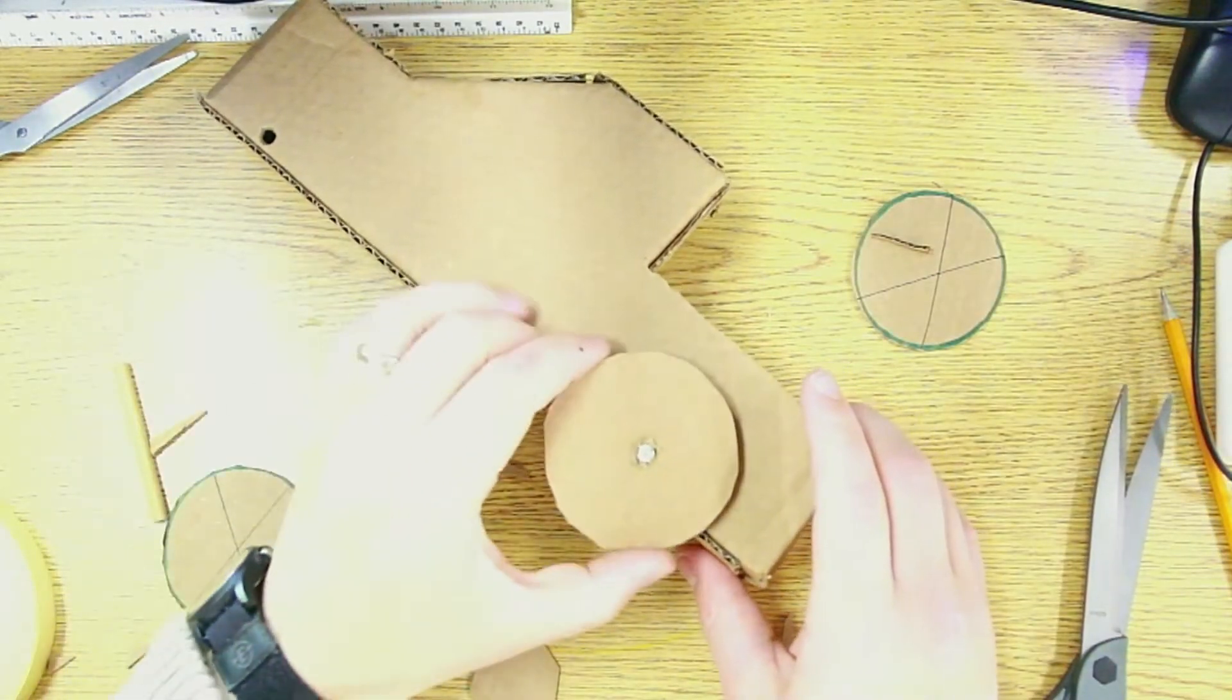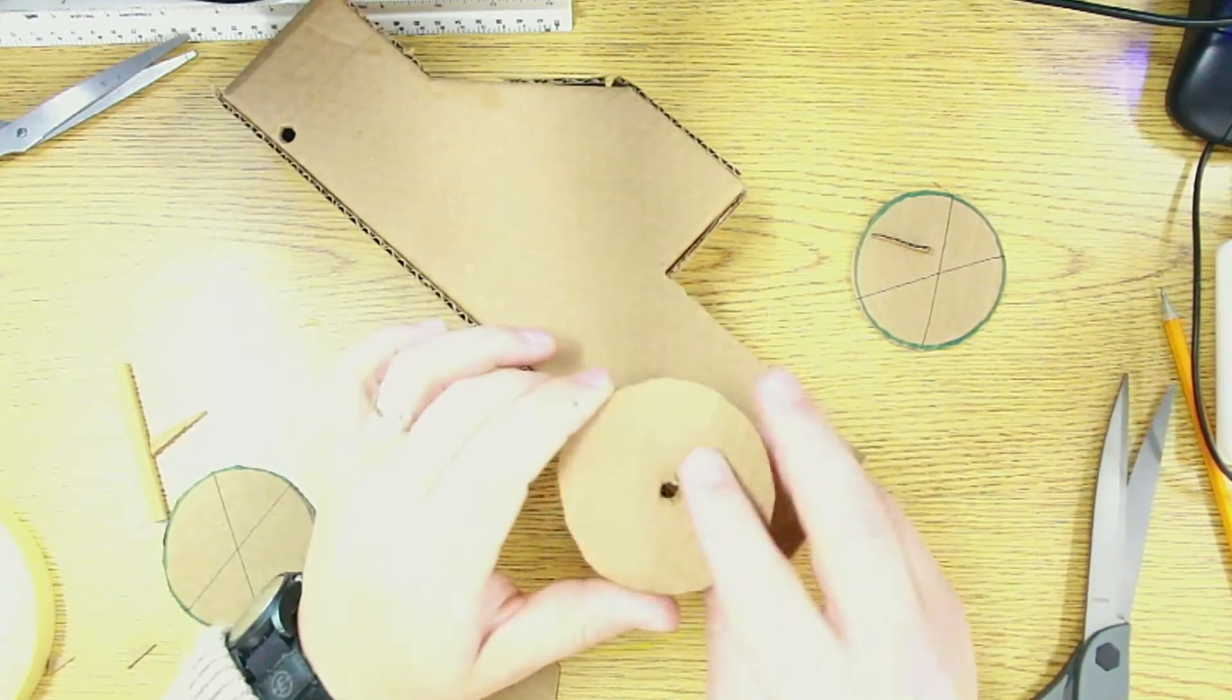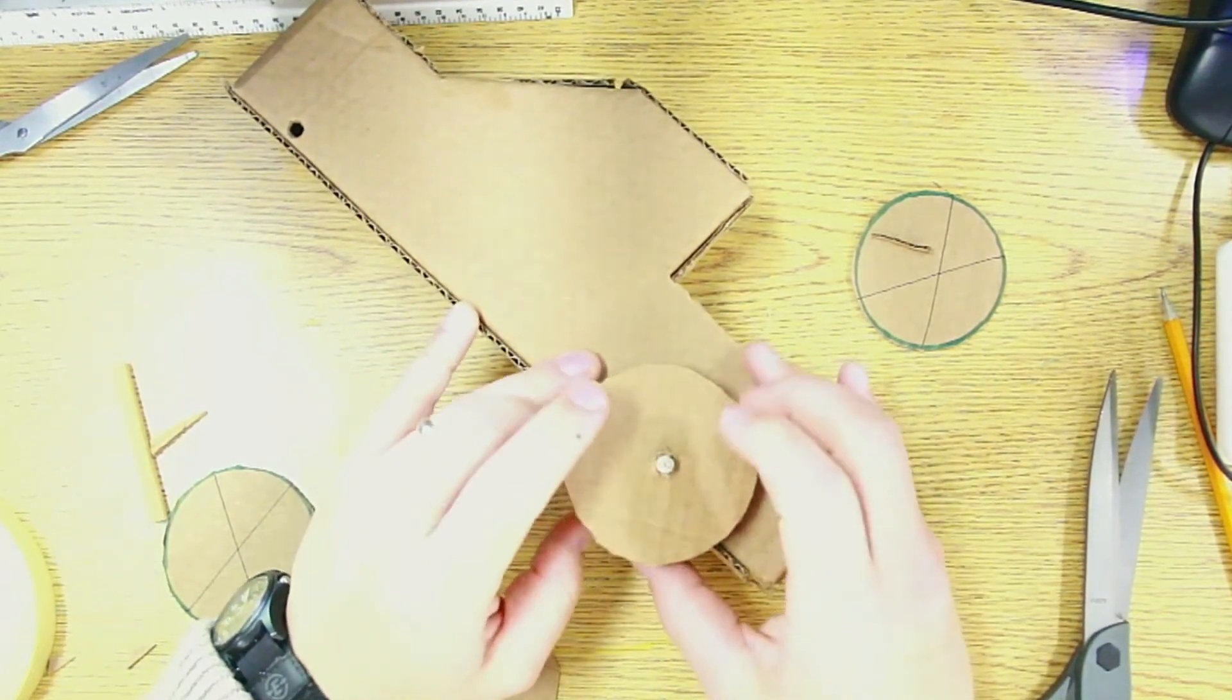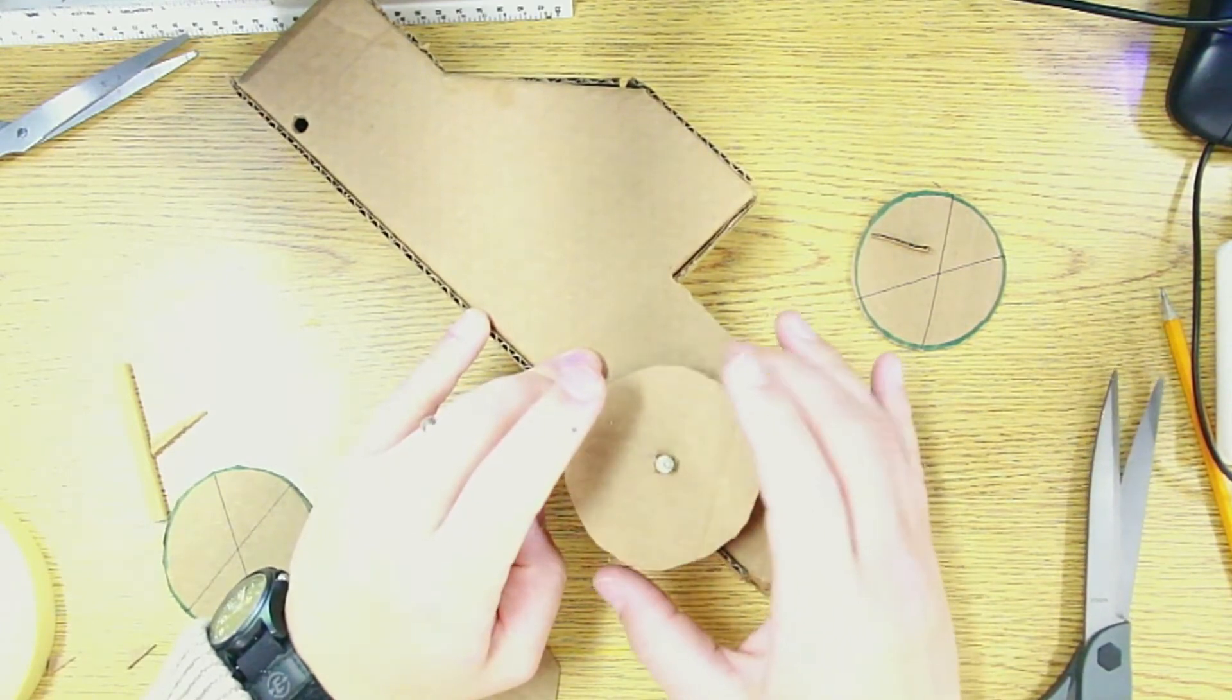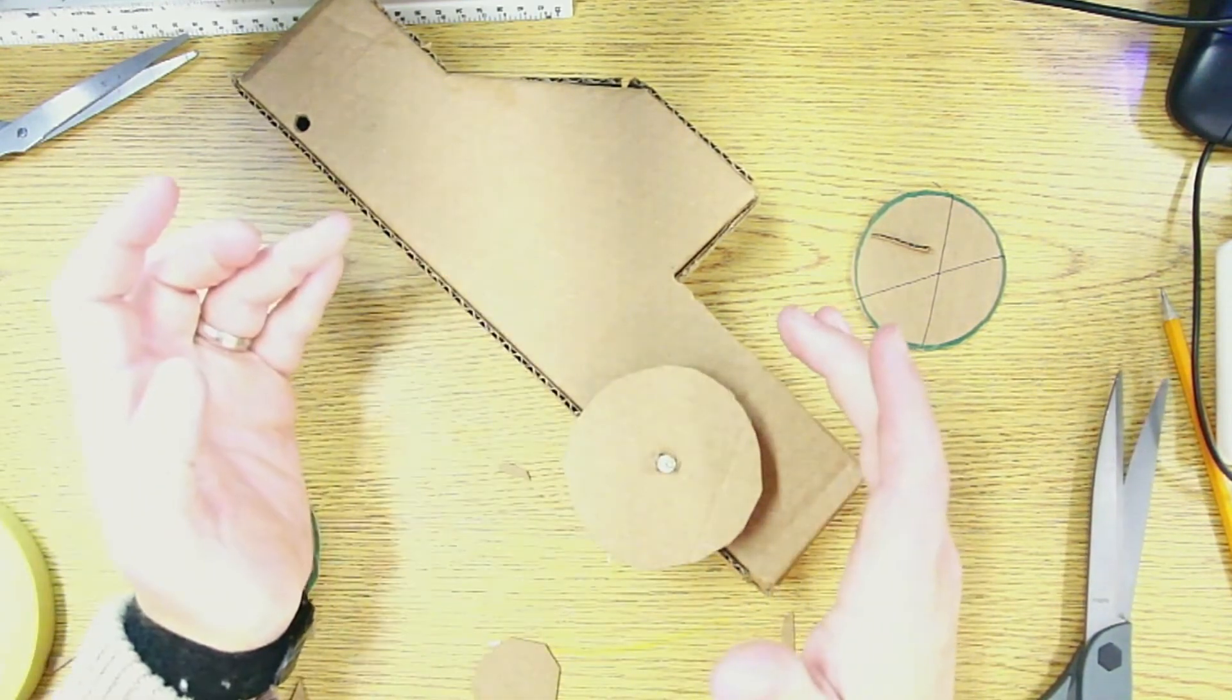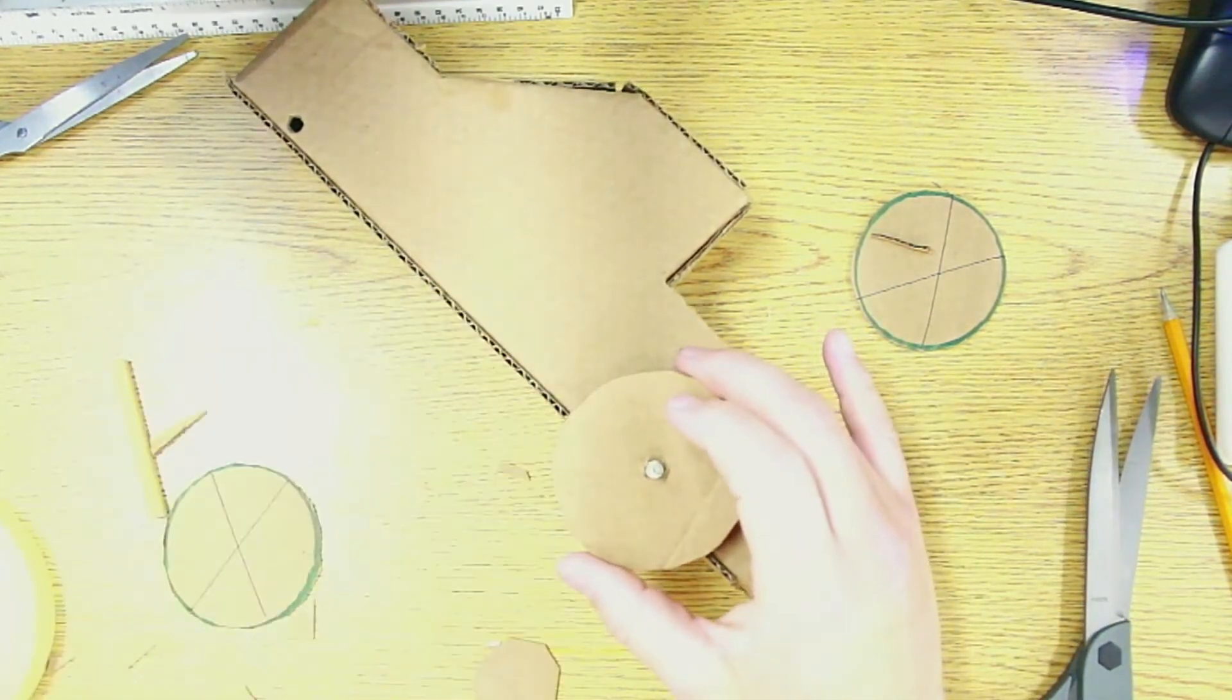Alright, so I've got the hole in the center of my wheel and as you slide it on whatever you have for an axle, you'll notice that it's probably not going to fit very tightly since it's cardboard after all. Now, there's a couple ways to address this.